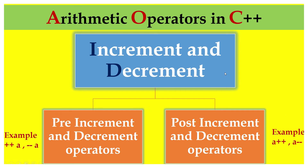The increment and decrement operators can be further classified into pre-increment and decrement operators, and post-increment and decrement operators. For example, ++A and --A are examples for pre-increment and pre-decrement. On the other hand, A++ is an example for post-increment and A-- is an example for post-decrement operators.